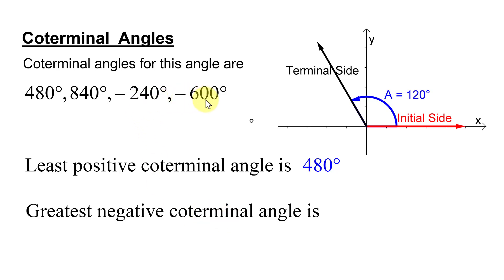Then we're often asked for the greatest negative coterminal angle. And of all the negative angles, the biggest one is going to be negative 240 degrees because that is less negative than all the other coterminal angles that are negative. So the greatest negative coterminal angle is negative 240 degrees.